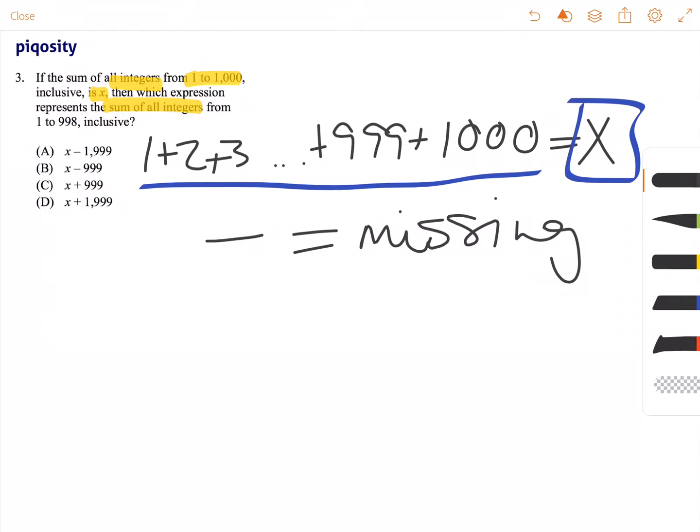So let's look at this here, so we have 1 plus 2 plus 3, all the way to plus 996, plus 997, plus 998.